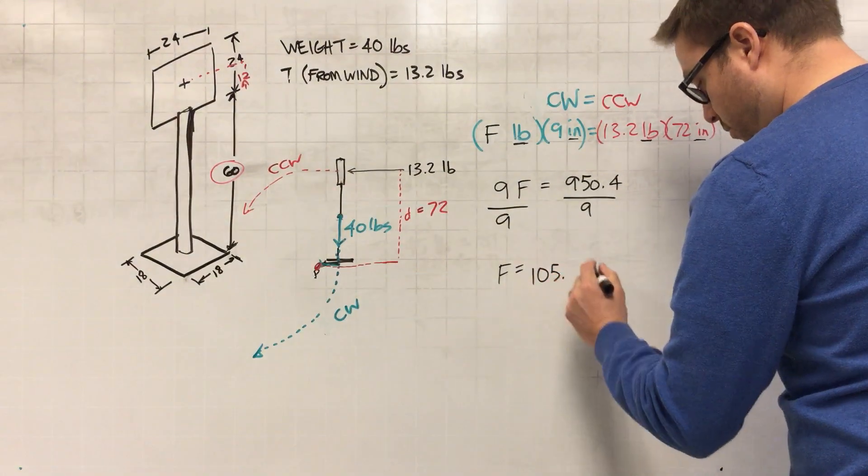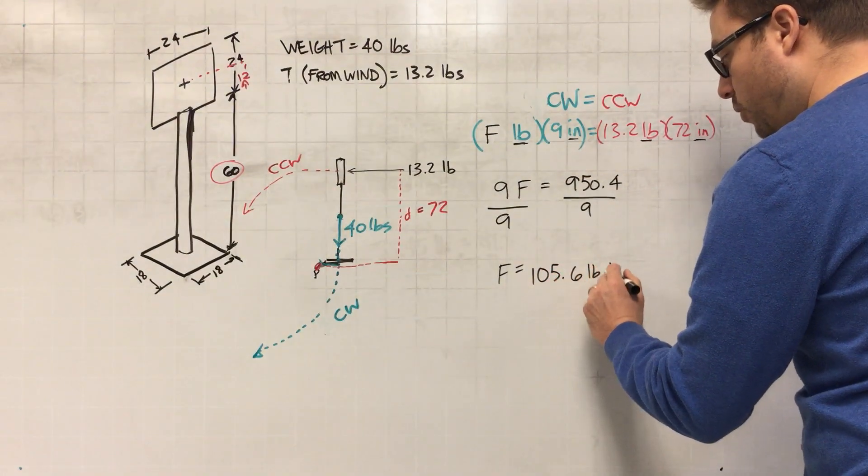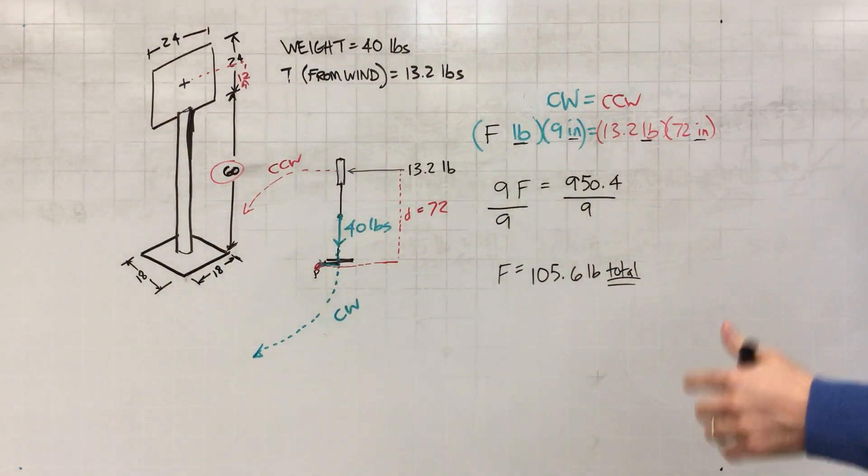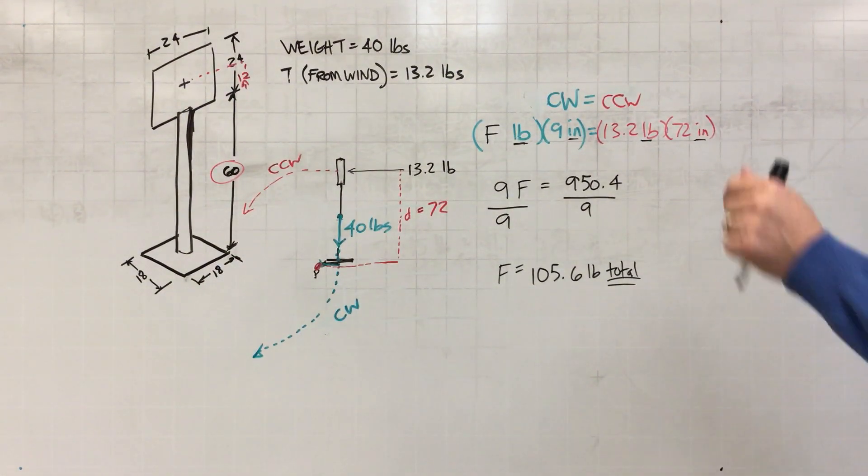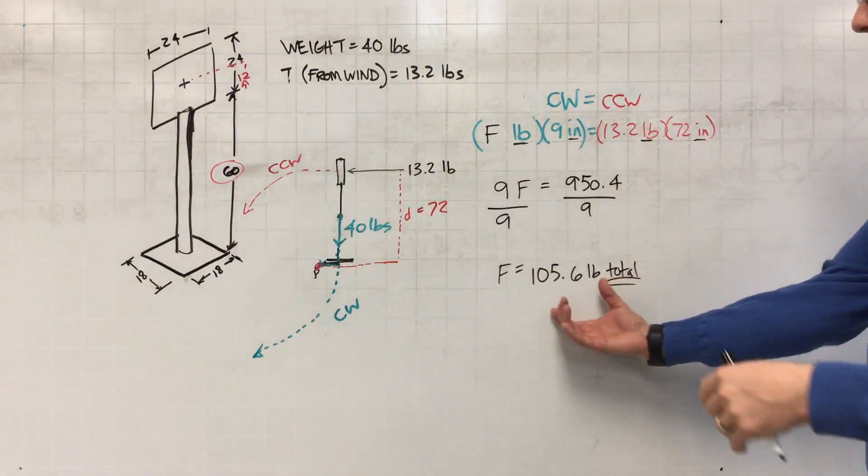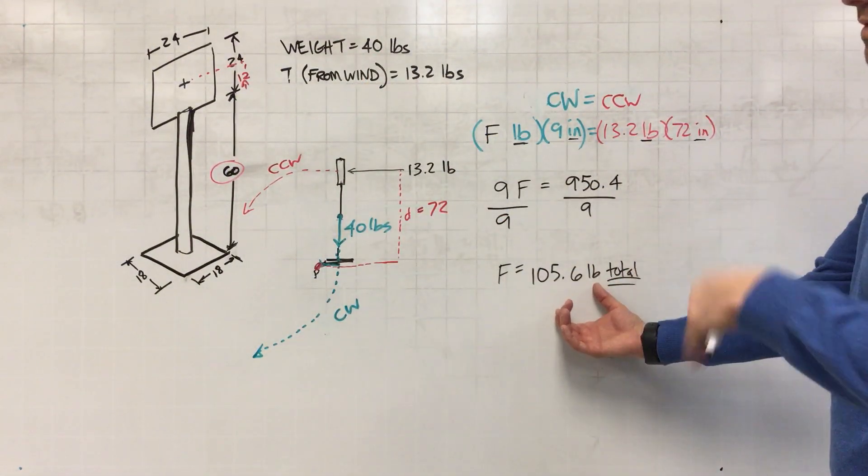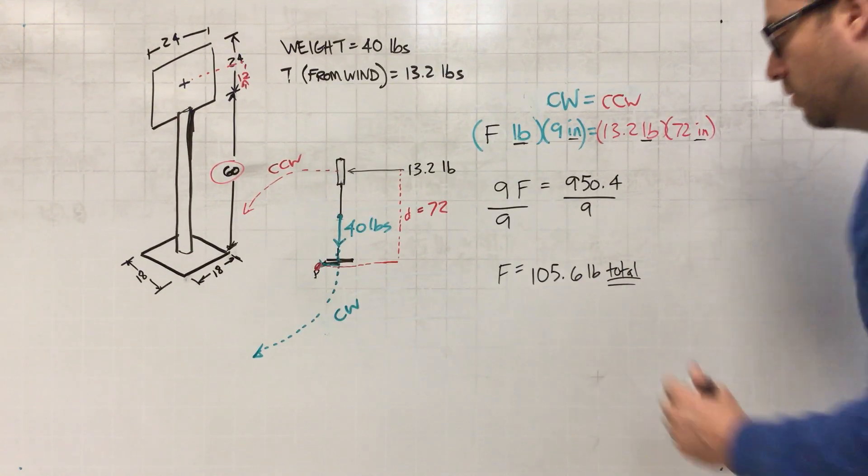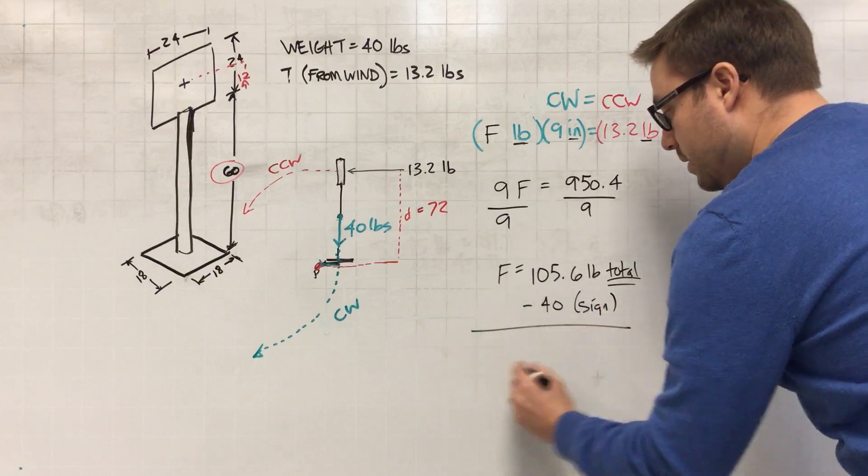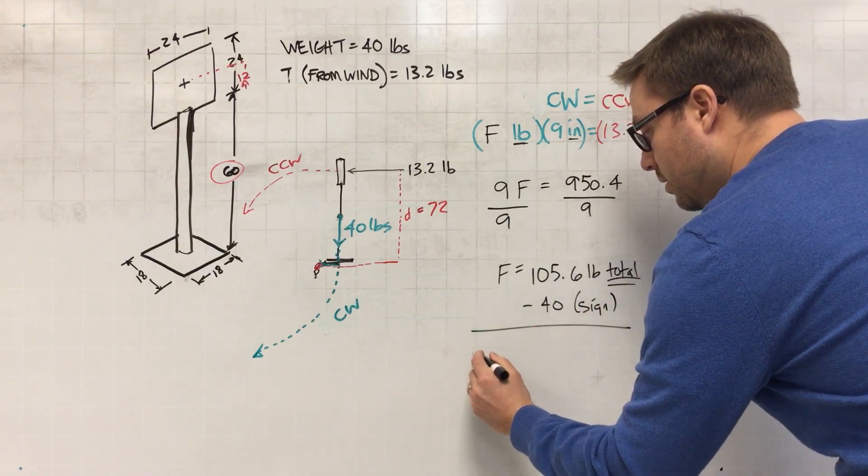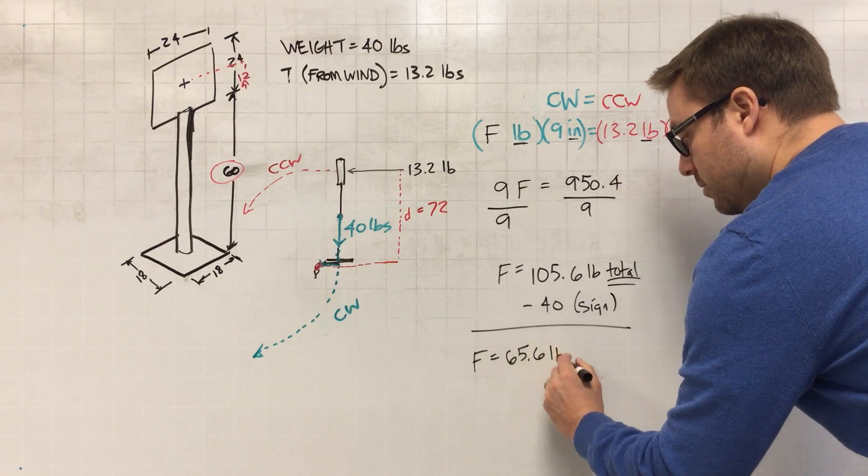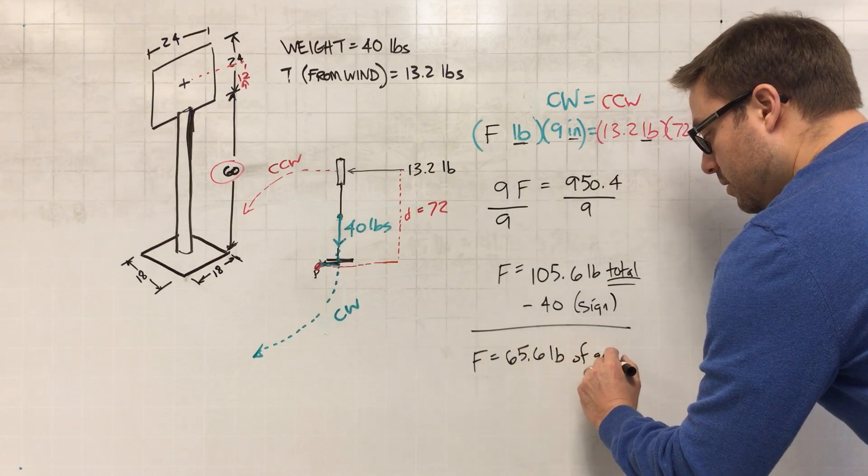And that would be 105.6 pounds total. Now that includes sandbags and the sign. And what I know is that the sign itself weighs 40 pounds, so I don't need 105 pounds of sandbags, what I need is 65 pounds of sandbags. Right, so if I subtract off 40 from the sign, what I know is that I need a weight equal to 65.6 pounds of sandbags.